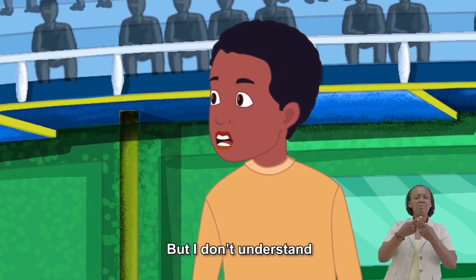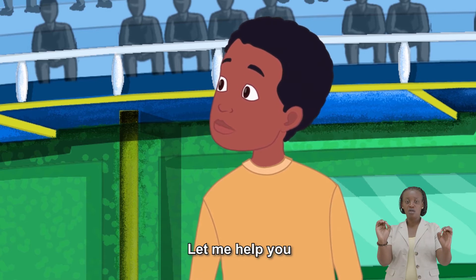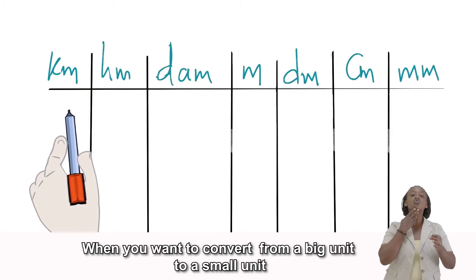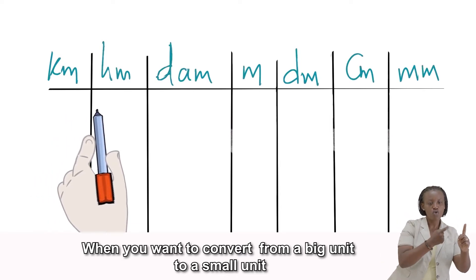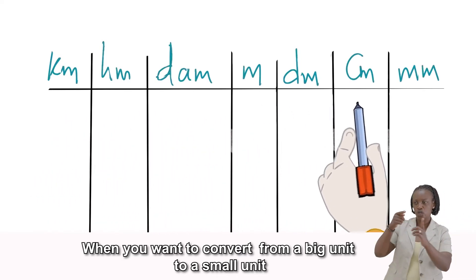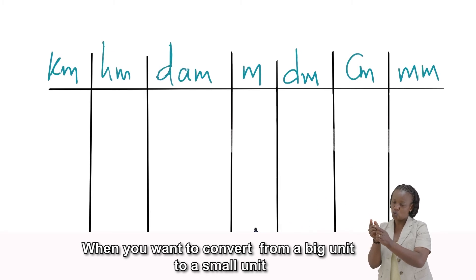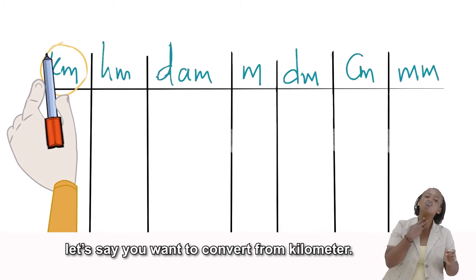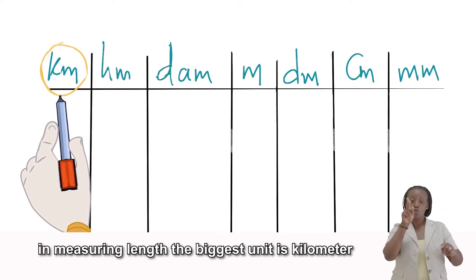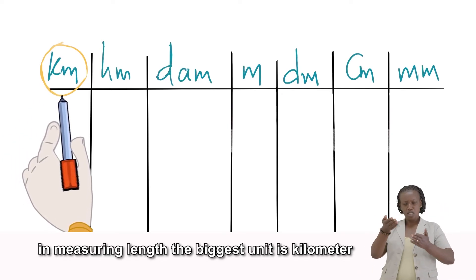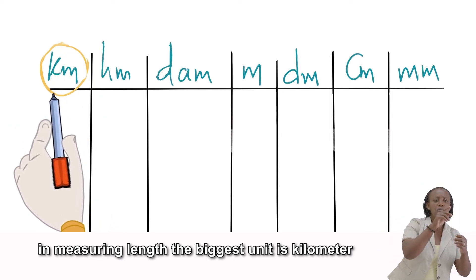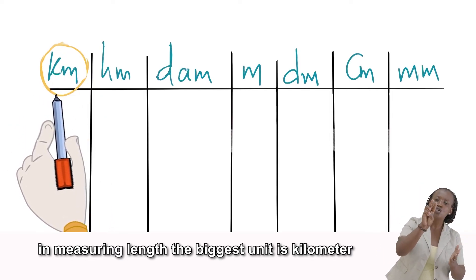But I don't understand. Let me help you. When you want to convert from a big unit to a small unit, let's say you want to convert from kilometer. In measuring length, the biggest unit is kilometer.